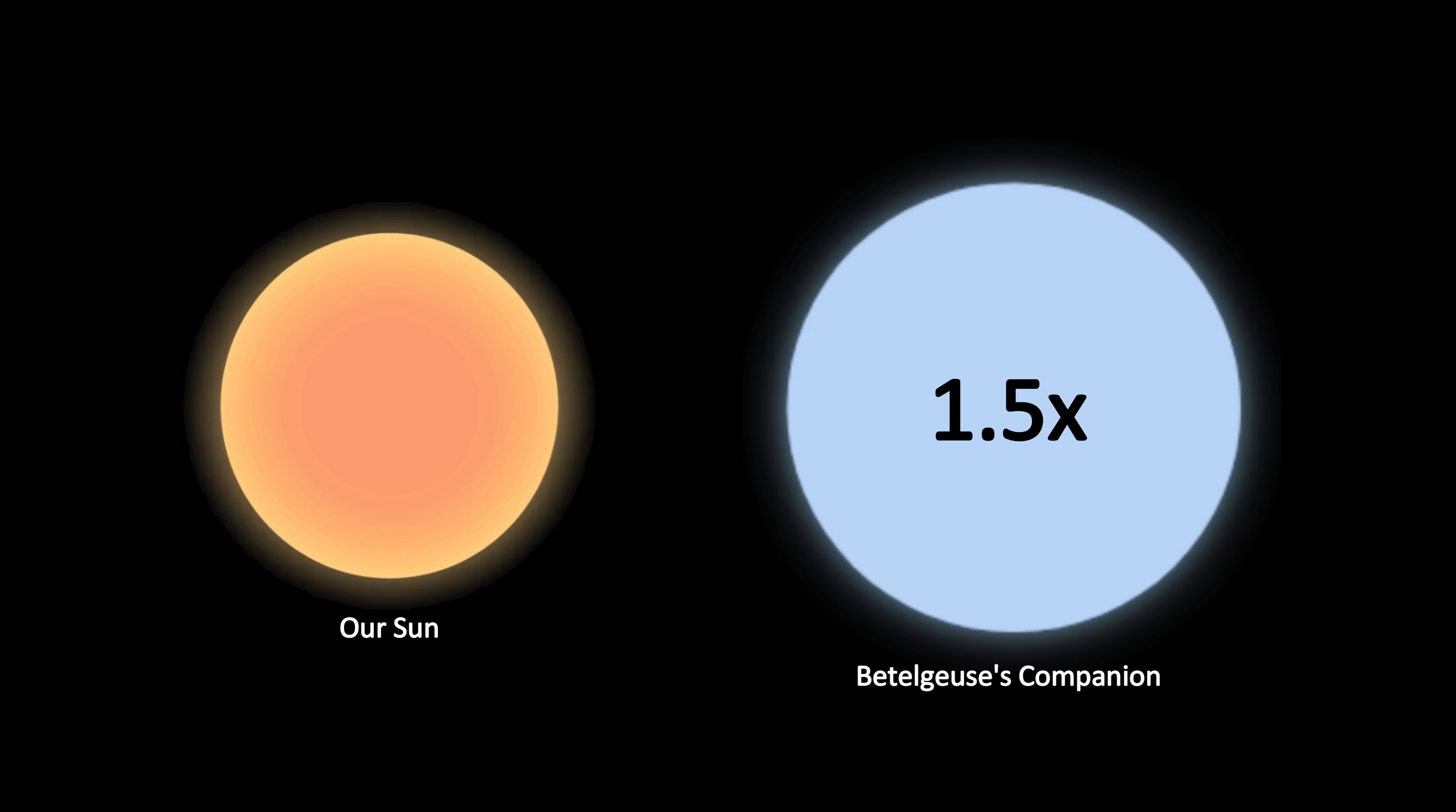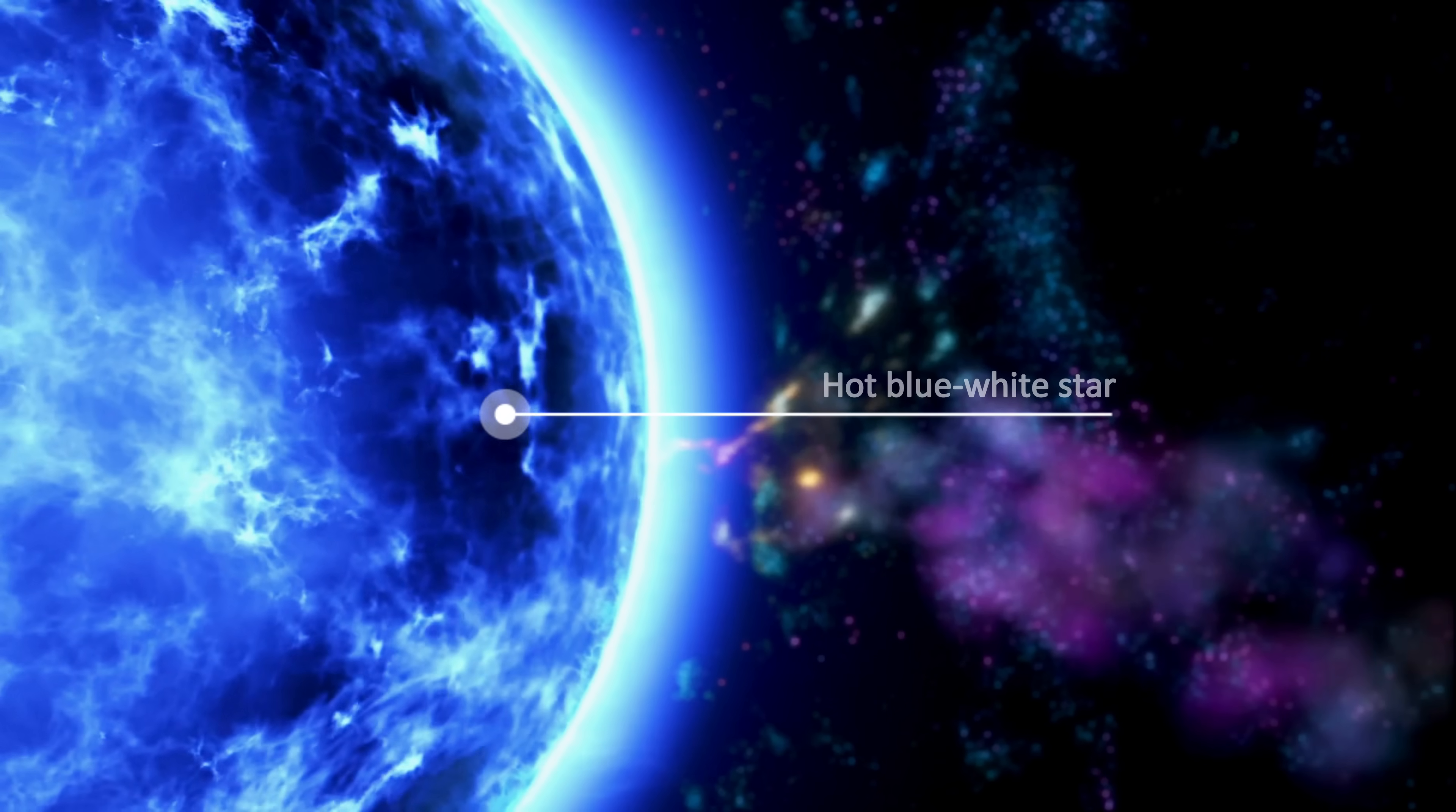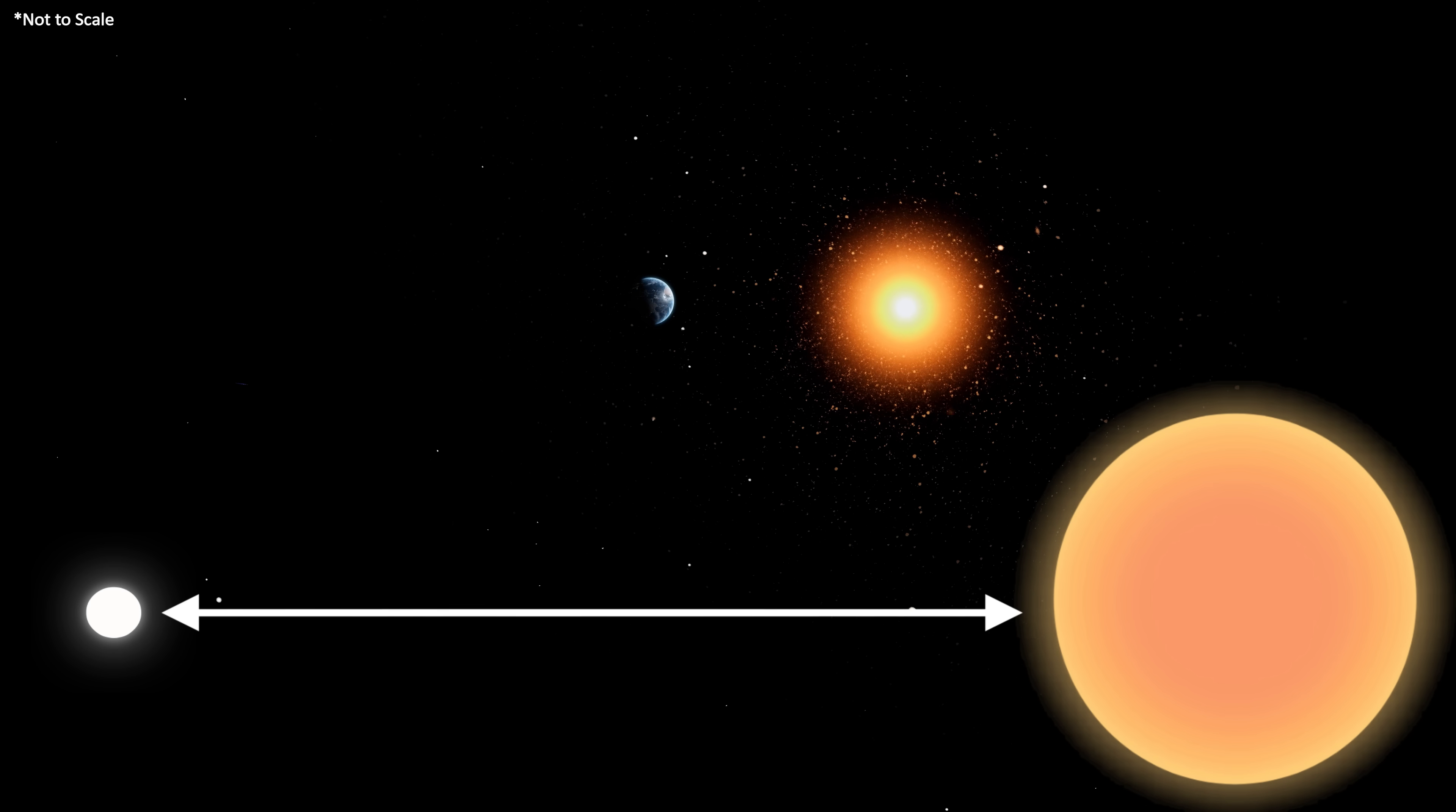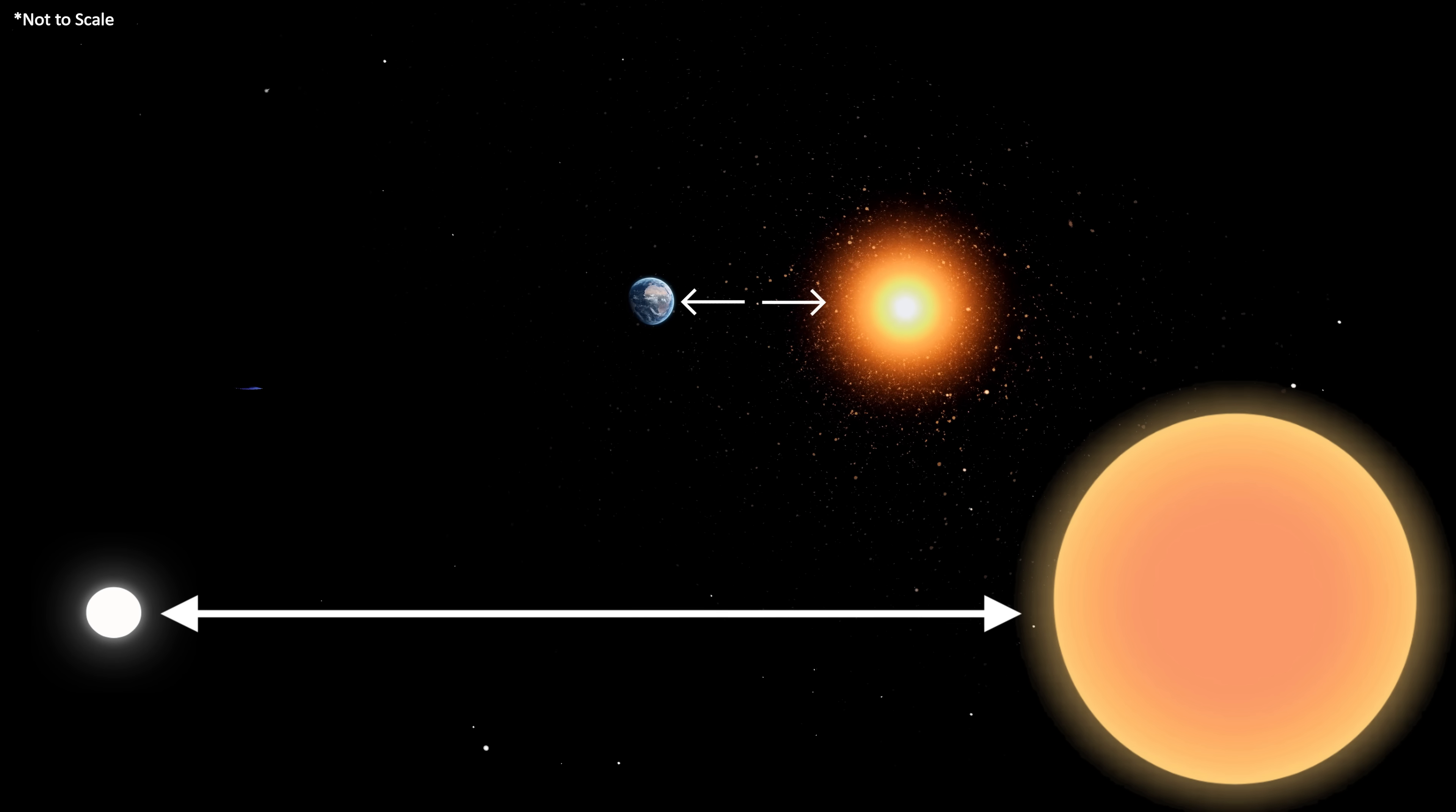It has an estimated mass of around 1.5 times that of the sun, and it is a hot blue-white star orbiting the red giant at a distance equivalent to four times the distance between Earth and the sun, fairly close for binary stars.